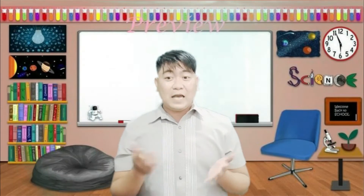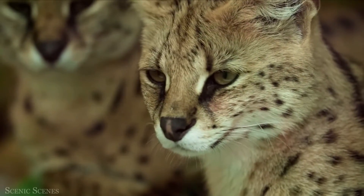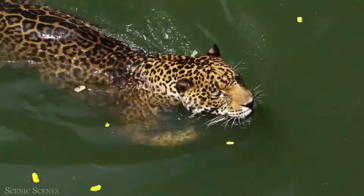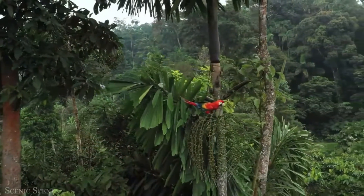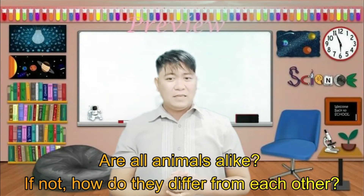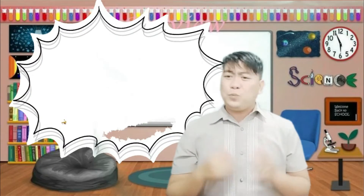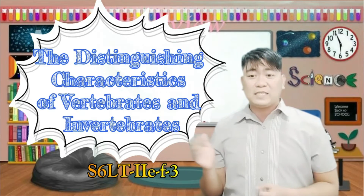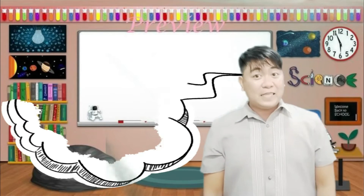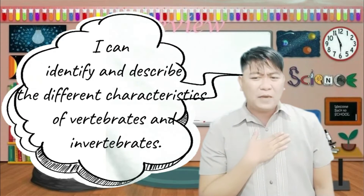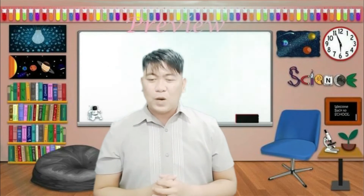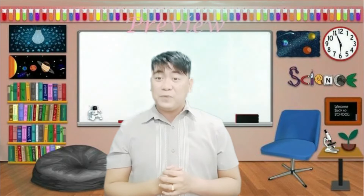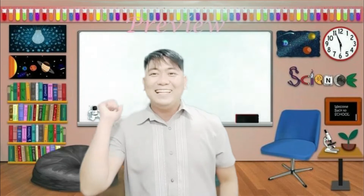Great job, Learners! Grade 6, I want you to observe it. Are all animals alike? If not, how do they differ from each other? Grade 6, we will discuss about the distinguishing characteristics of vertebrates and invertebrates. Please say, Grade 6: I can identify and describe the different characteristics of vertebrates and invertebrates. Now watch and listen carefully as we will explicitly discuss the distinguishing characteristics of vertebrates and invertebrates. Let's go, Learners!